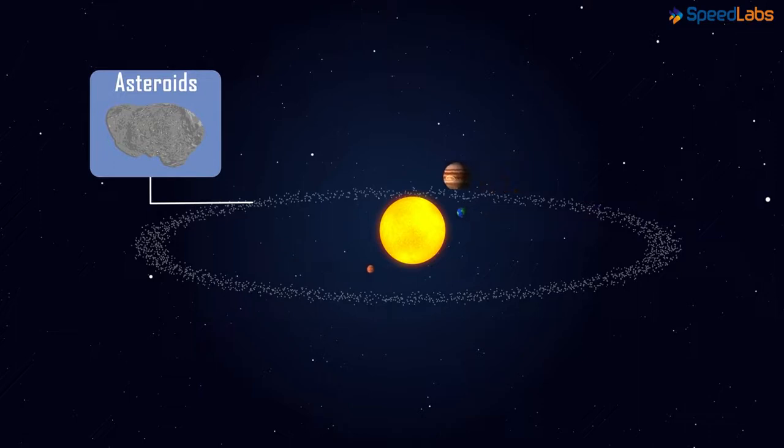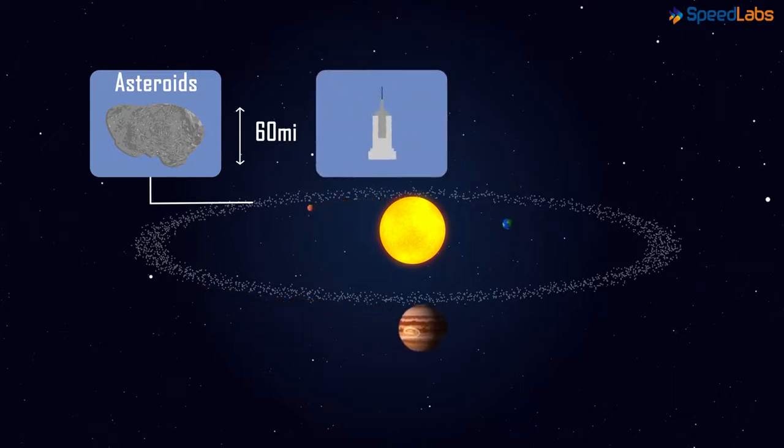These objects are rocky in appearance and are very, very big. Well, not as big as planets, but they are almost 60 miles in diameter. Most of them are bigger than the Empire State Building in America.